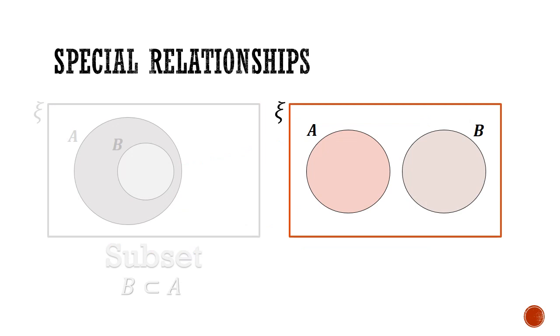The other special case is the disjoint set. A and B are disjoint sets if they have no common elements. For example, in chemistry, the set of alkali metals is disjointed from the set of noble gases. There are no elements that belong to both groups.